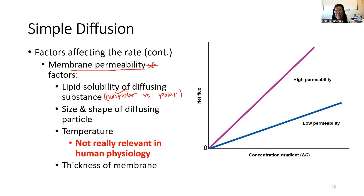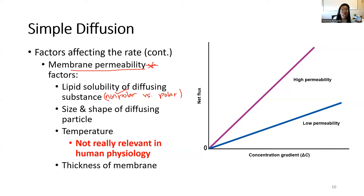The second factor affecting membrane permeability is the size and shape of the particle. If the particle is big and bulky or has an abnormal shape, it's not going to go through the membrane easily — it will need help, either a channel or a transporter. With a large, bulky particle, we're going to have essentially zero membrane permeability and zero simple diffusion.